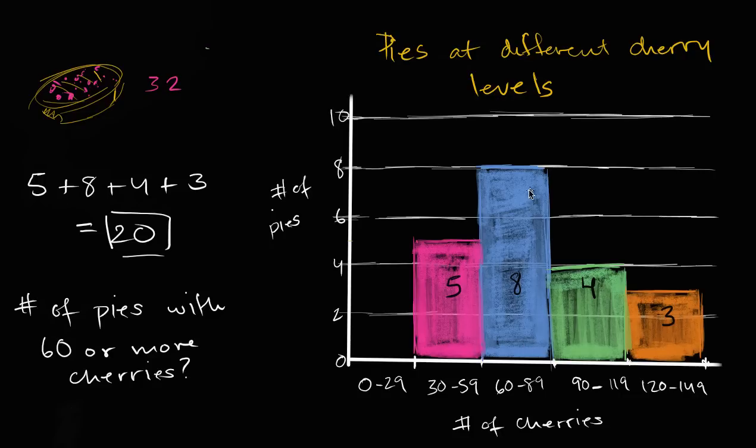So it's going to be these eight pies that are in this bucket, plus these four pies, plus these three pies.